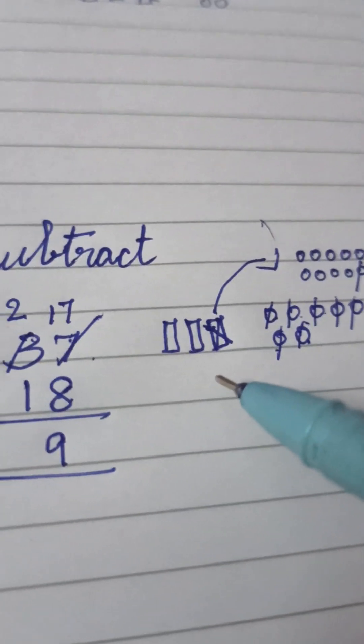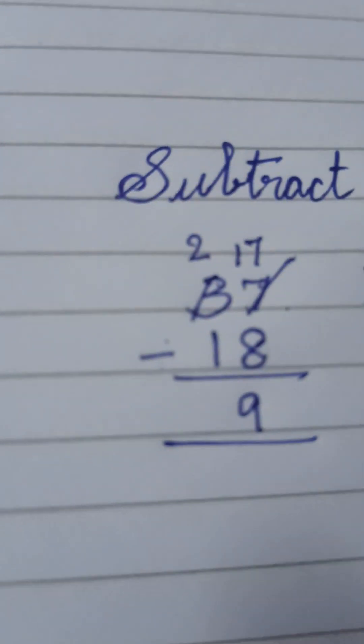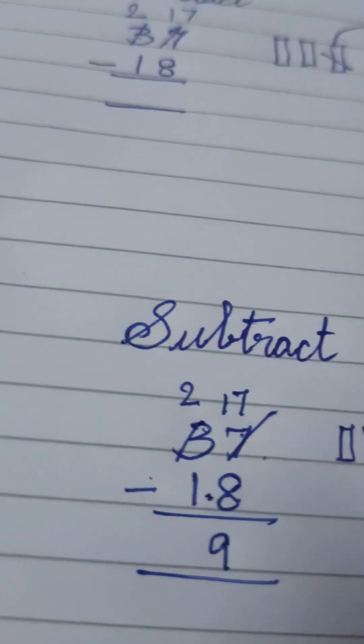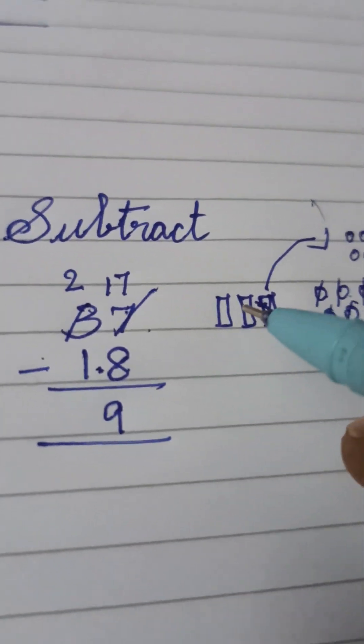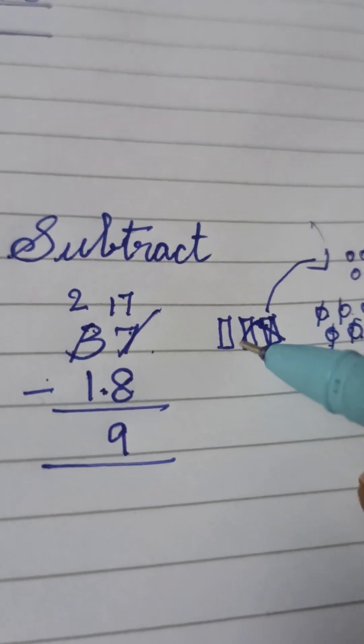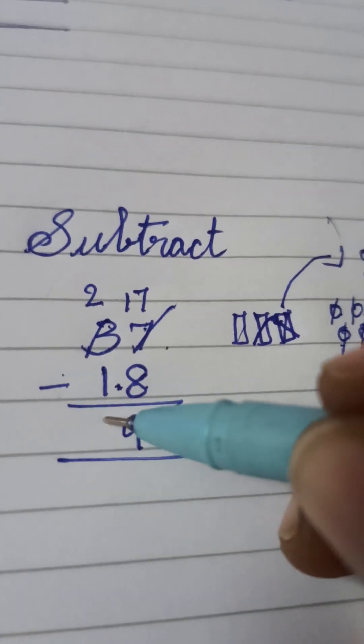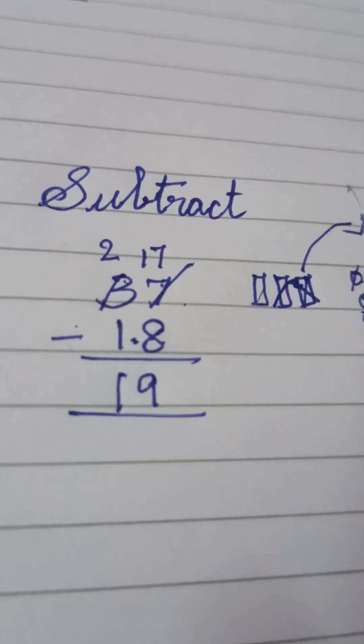And now we have two tens. Out of these two tens, we have to take away one ten. So we can take away one ten. How many tens are left now? Only one ten. When we take away one ten, we have only one ten left.